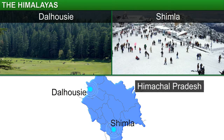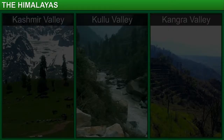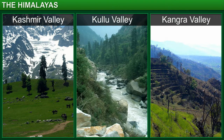Of these, Dalhousie and Shimla are located in Himachal Pradesh while Ranikhet and Nainital are part of Uttarakhand. The most picturesque valleys — the Kashmir, Kullu and Kangra valleys in Himachal Pradesh — are part of this area.